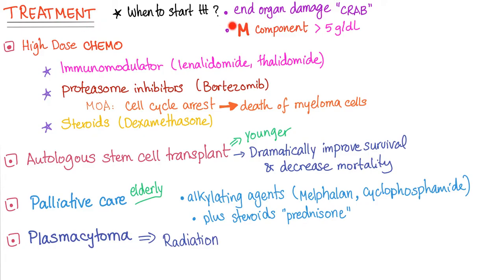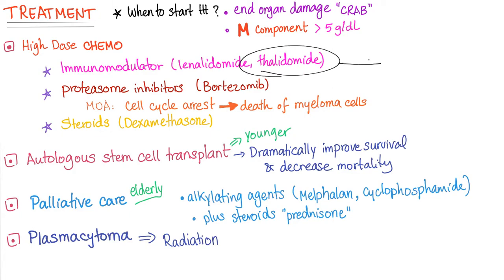Treatment is started when there is end organ damage or when M component is more than 5. High-dose chemotherapy is the first step. Immunomodulators such as thalidomide and lenalidomide, and proteasome inhibitors such as bortezomib, cause cell cycle arrest leading to death of myeloma cells. Steroids — specifically dexamethasone — are added.